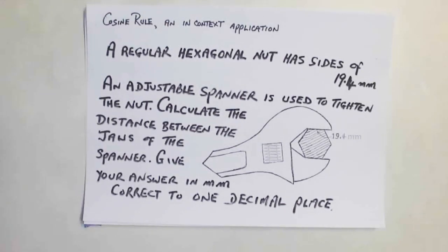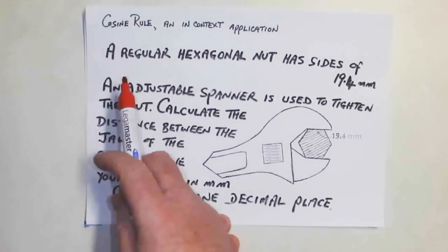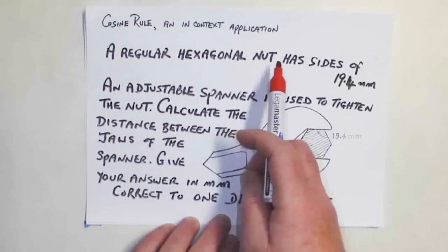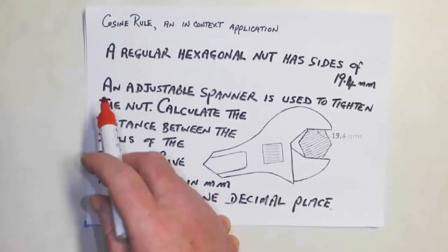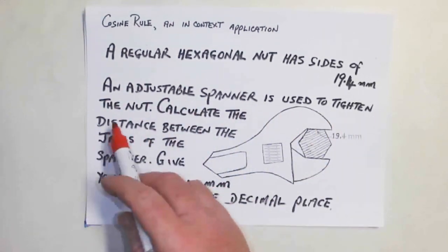In this clip we're going to look at the cosine rule, an in-context application, and what we've got is a scary moment. A regular hexagonal nut has sides of 19.4 millimeters. When you look at this you'll think you're in an engineering class or something, and it's kind of scary for the minute. An adjustable spanner is used to tighten the nut.